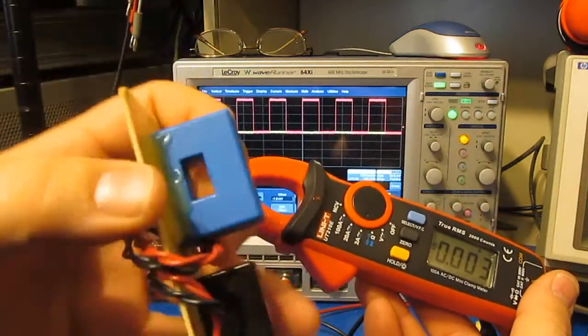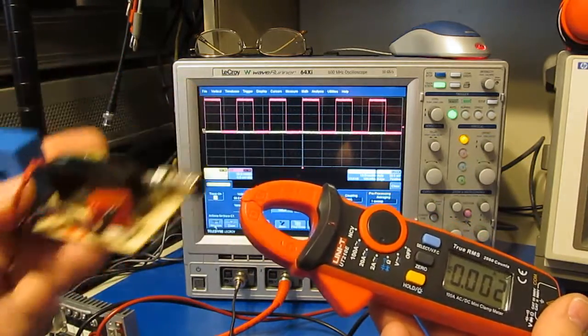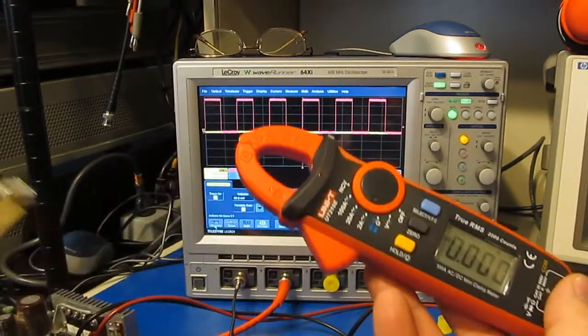If I compare this with like this LEM transformer, this one's good for about 50 amps. You can see I've got an oscilloscope output on it. Bandwidth on this is pretty good, much much higher than what this thing is.